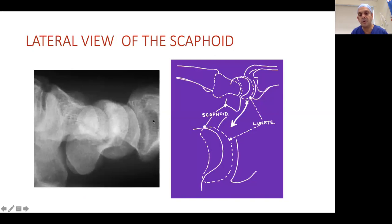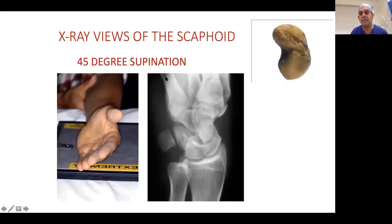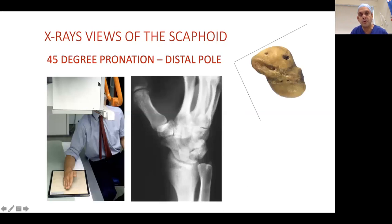The 45-degree supination view shows the proximal pole clearly, while the 45-degree pronation view gives you the distal pole — the proximal pole is superimposed in pronation view. These two views are really important during screw fixation to confirm the screw is not prominent proximally or distally. Because the scaphoid is a very twisty, bean-shaped bone, unless you do all four views it's very hard to center your screw. Get all four views.